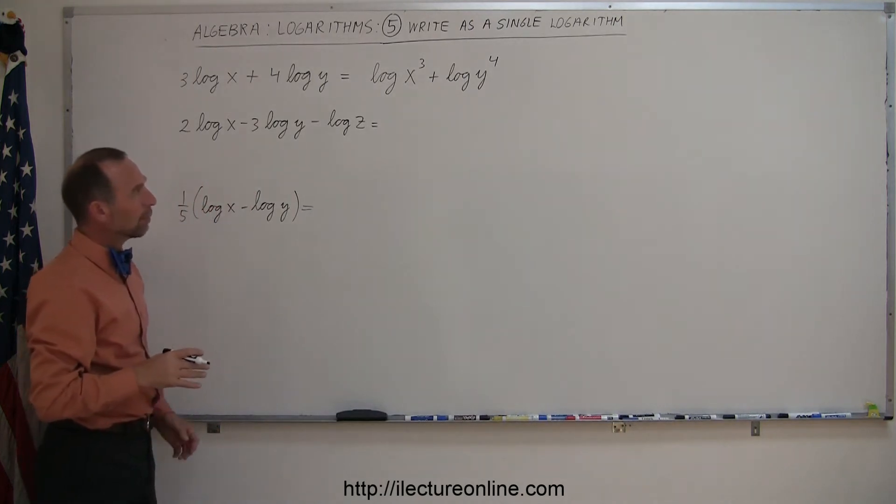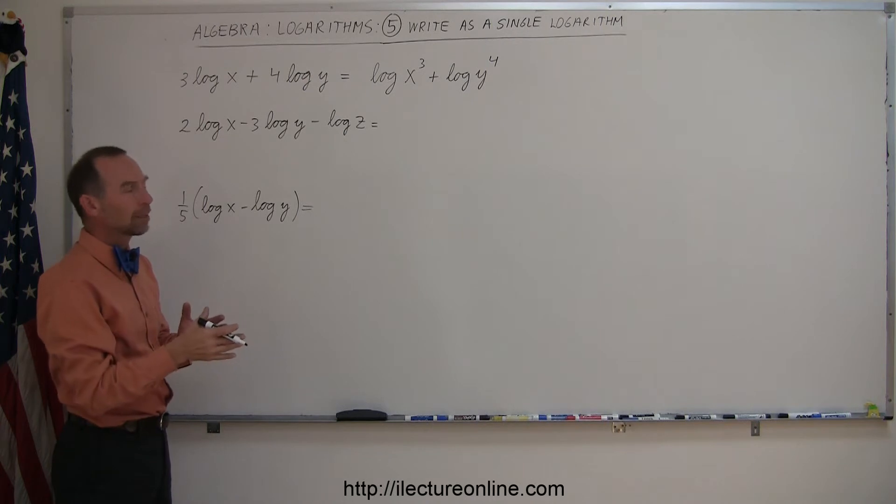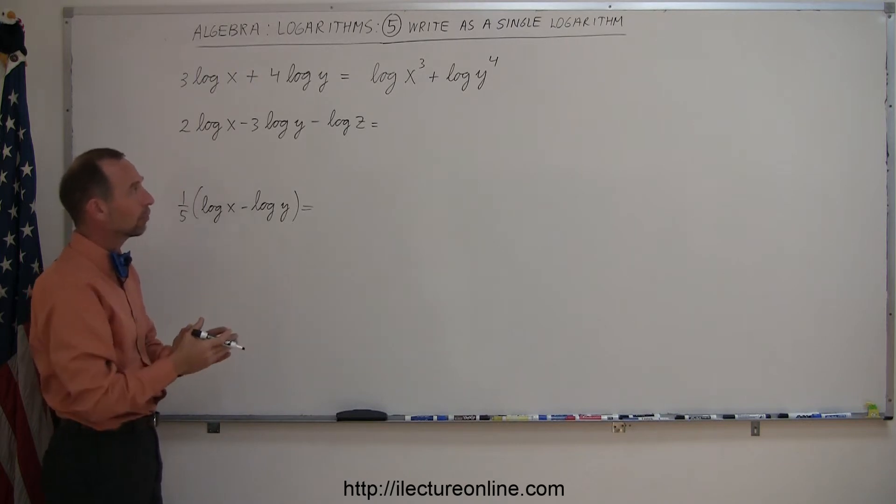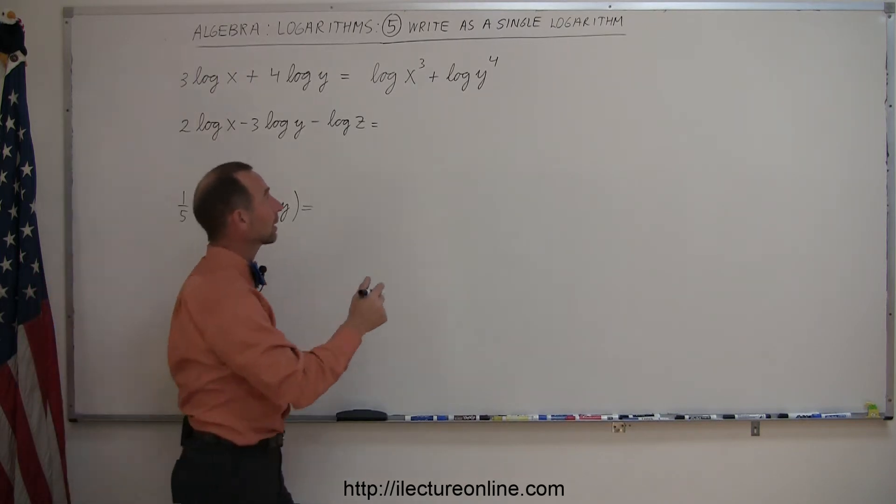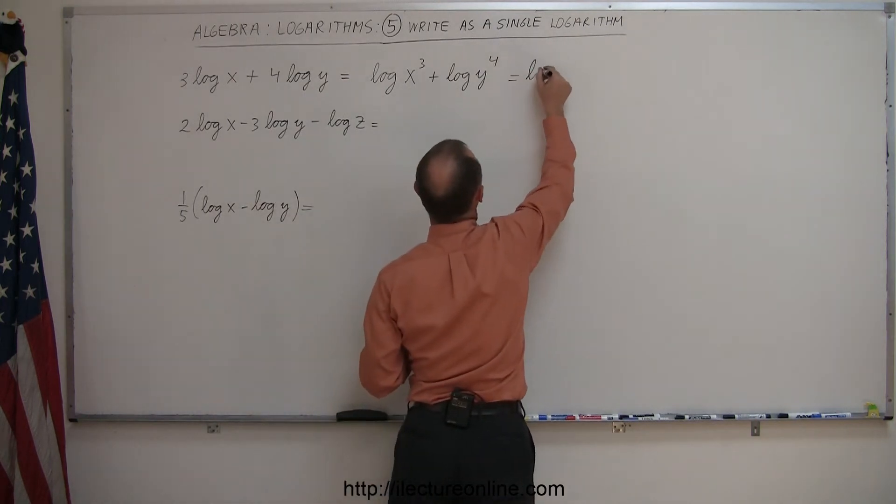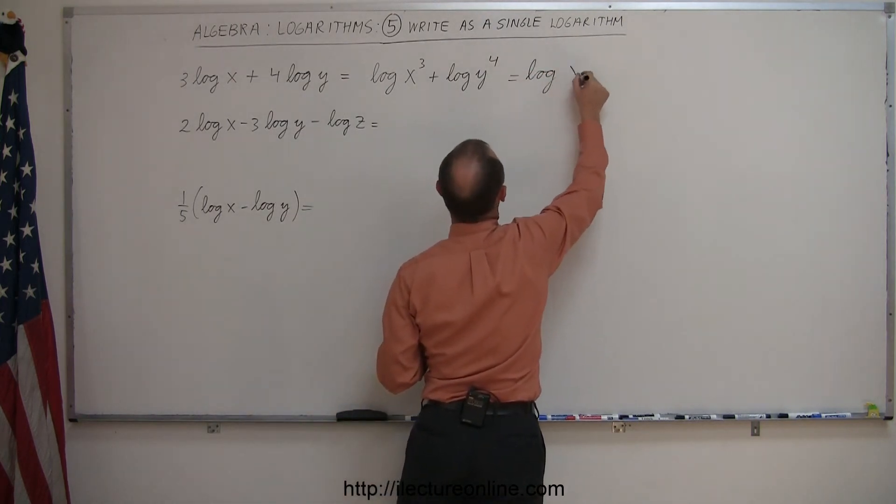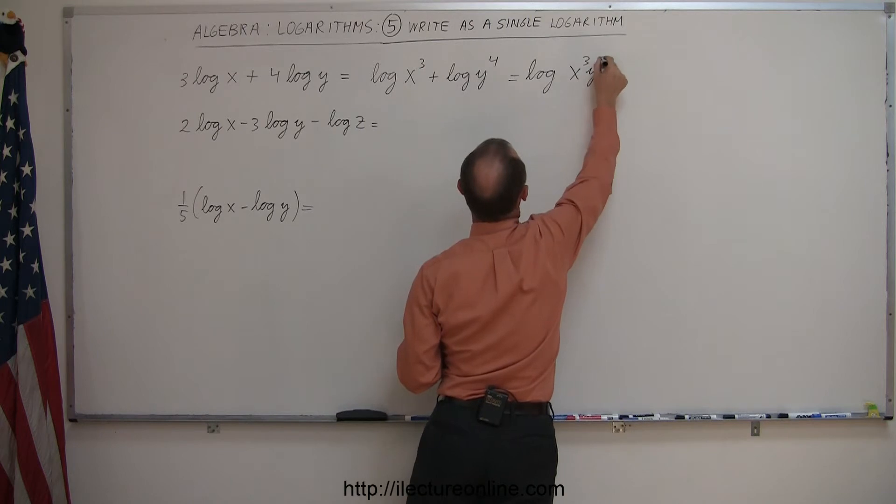Remember the rule that when we have the log of a times b, that can be written as the sum of the log of a plus the log of b. So we can work in reverse. The log of x cubed plus the log of y to the fourth power can now be written as a single logarithmic expression of x cubed times y to the fourth power.